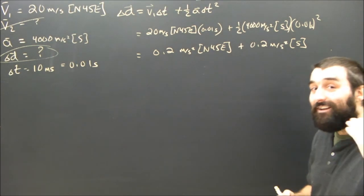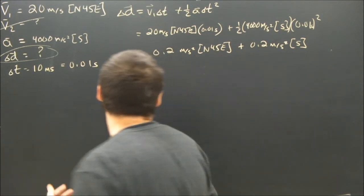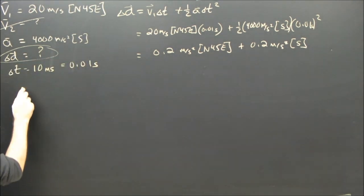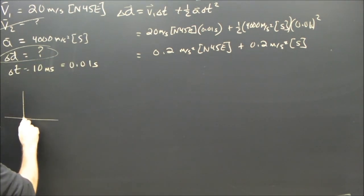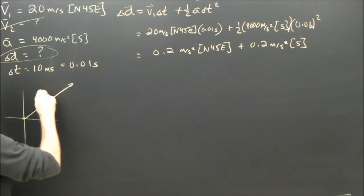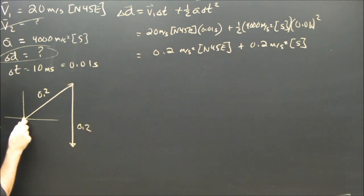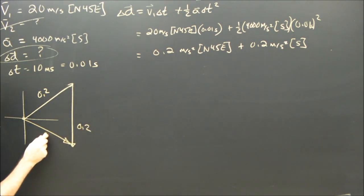0.2 plus 0.2 is sure as heck not going to be 0.4. There's a couple possibilities here. You could draw it like we did last time. You could say 0.2 north east, and then 0.2 south, and then we would expect the displacement to be there.